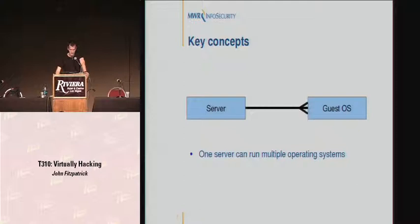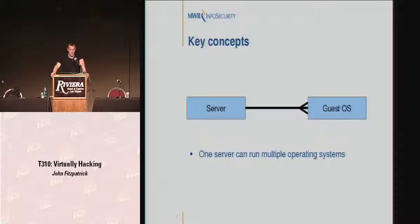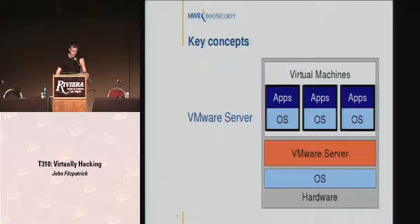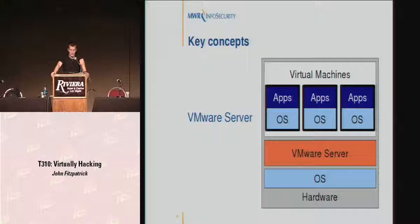The key concept with virtualization: you have one server which can run multiple guest operating systems. Essentially, one piece of hardware can be many boxes on your network. With VMware's virtual infrastructure, this becomes a many-to-many relationship — you might run multiple ESX boxes, each with multiple operating systems. VMware Server looks like this: you've got your hardware, on top of that you install your operating system — Windows, Linux, whatever — then VMware Server, and on top of that you create virtual machines, each with their own operating system and applications.